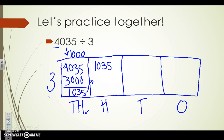We're bringing that over — we have 1035 left. We still have a number in the thousands place, but three cannot go into one. So we have to think of that as being 10 groups of 100 so that we can use both of these numbers. How many times can three go into 10 without going over? That is three times, and because we're in the hundreds place, we need to add on those two zeros. We multiply three times 300 — three times three is nine, don't forget the two zeros. Subtracting: five minus zero is five, three minus zero is three, and 10 minus nine is one.